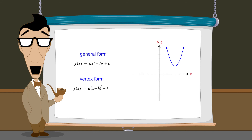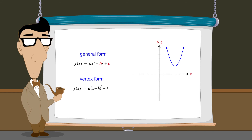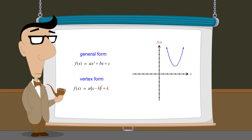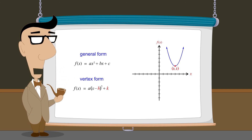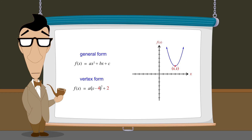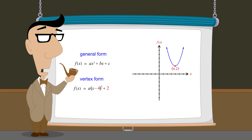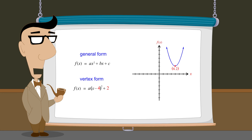On the other hand, unlike the constants b and c in the general form, in the vertex form, h and k are the actual horizontal and vertical coordinates of the vertex. This allows the coordinates of a parabola's vertex to be identified simply by looking at the function. For example, the horizontal and vertical coordinates of this parabola's vertex are 4 and 2.